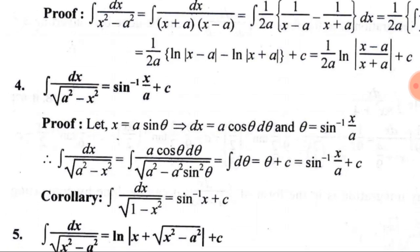The fourth integral is ∫dx/√(a² − x²) = sin⁻¹(x/a) + C. We substitute x = a·sin θ, so dx = a·cos θ dθ and θ = sin⁻¹(x/a). Substituting, we get the integral of a·cos θ dθ divided by √(a² − a²·sin²θ).